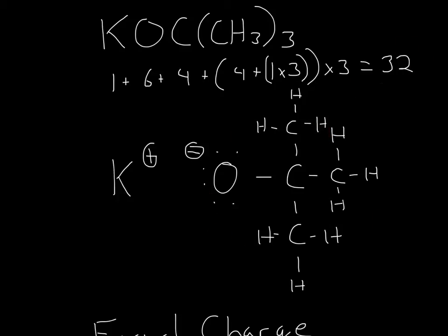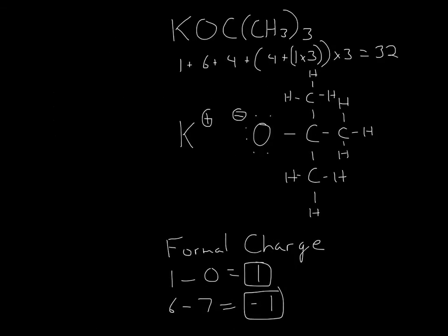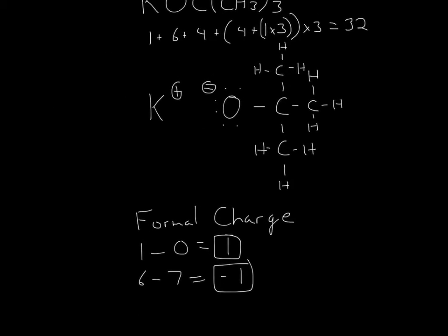So now for formal charges, what we do is just go down. So the formal charge, why this is a plus charge is because since K is in group 1, it's going to be 1 minus the bonds or lone pairs. And since this doesn't have any bonds or lone pairs, it's going to be 1 minus 0. So it'll be at a +1 charge.